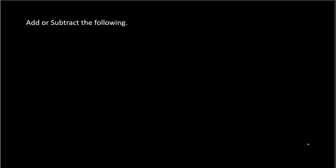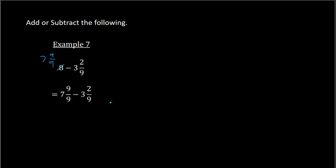Here we're subtracting a whole number by a mixed number: 8 minus 3 and 2/9. We don't have a fraction from the first number to subtract with the 2/9, so we borrow from the 8, making it 7, and rewrite the borrowed 1 as 9/9. Now we have 7 and 9/9 minus 3 and 2/9. Subtracting: 9/9 minus 2/9 gives 7/9, and 7 minus 3 is 4. Our solution is 4 and 7/9.